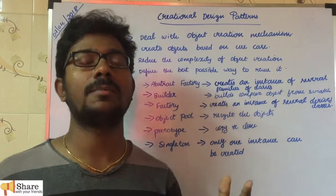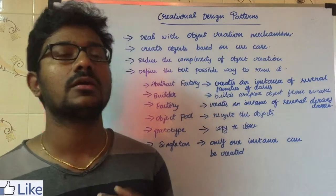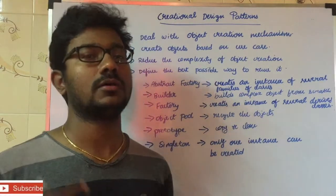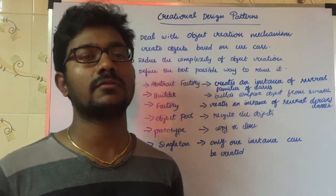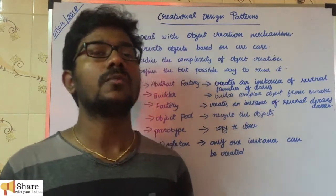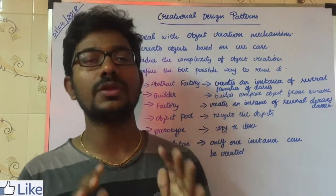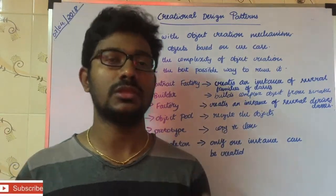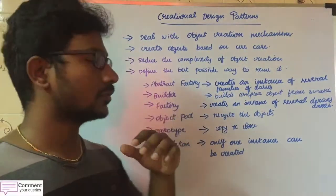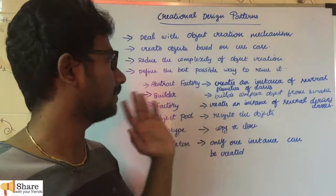Under animal family there are many classes like dog, cat, and we have another family called insect family with classes like ant, and human family. Based on input, Abstract Factory will return the best object. If your use case falls under this category, you need to use Abstract Factory design pattern.